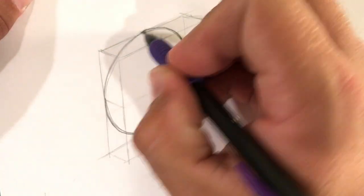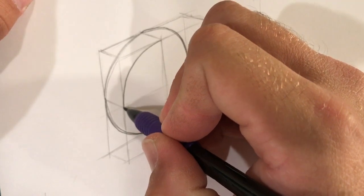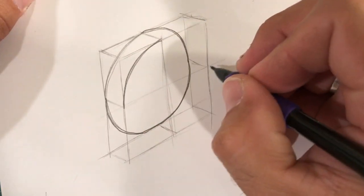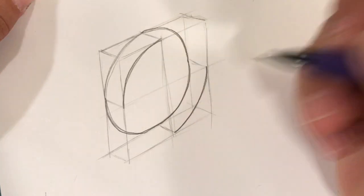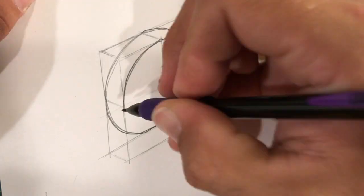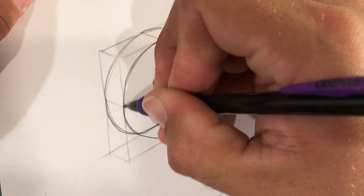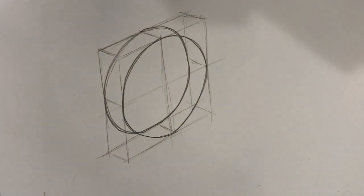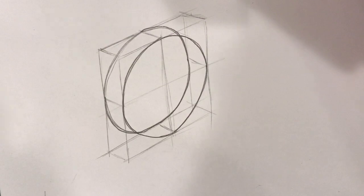And this is, we traced on the back side. And I'll trace on the front side. Just like that. So there we go. Now, we have our ring.